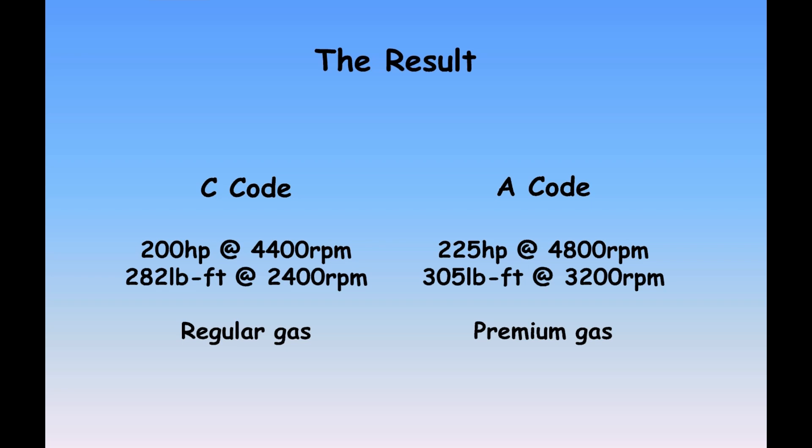Between 2,400 RPM and 3,200 RPM the A-code is going to have better mid-range acceleration, which is really where it comes into play when you're driving — accelerating on the freeway, passing through traffic, even doing stoplight grand prix. As that torque curve hits, you're going to pull better with the A-code. I'm sure I like the extra 25 ponies, but it's that torque curve that I think makes the bigger difference between the A-code and the C-code.